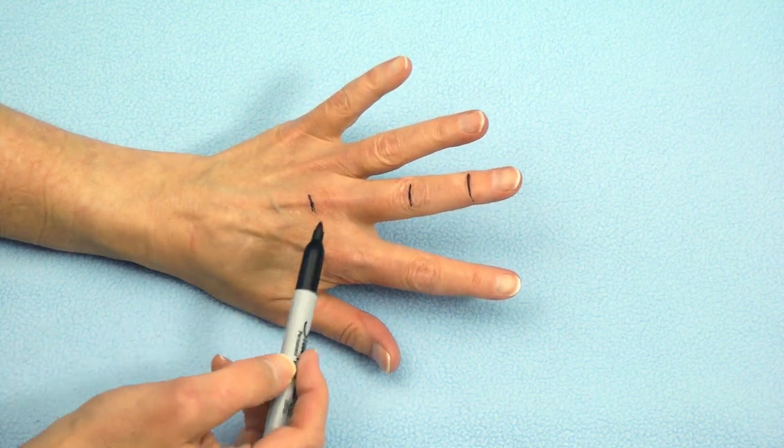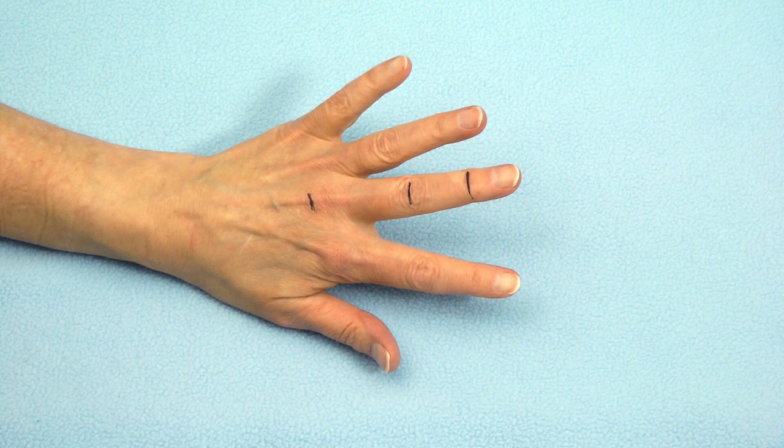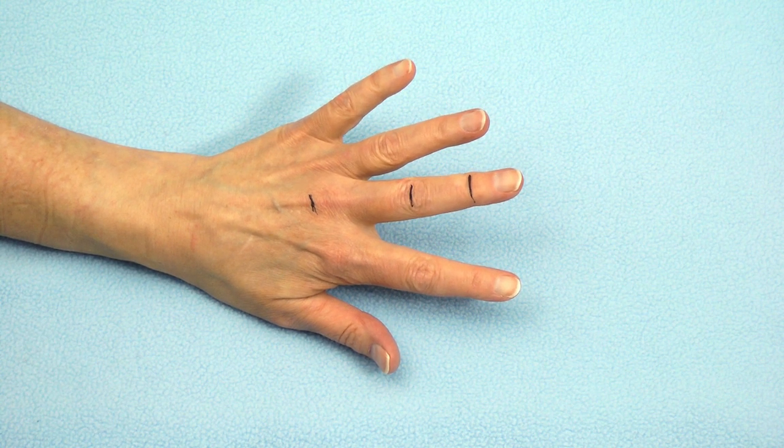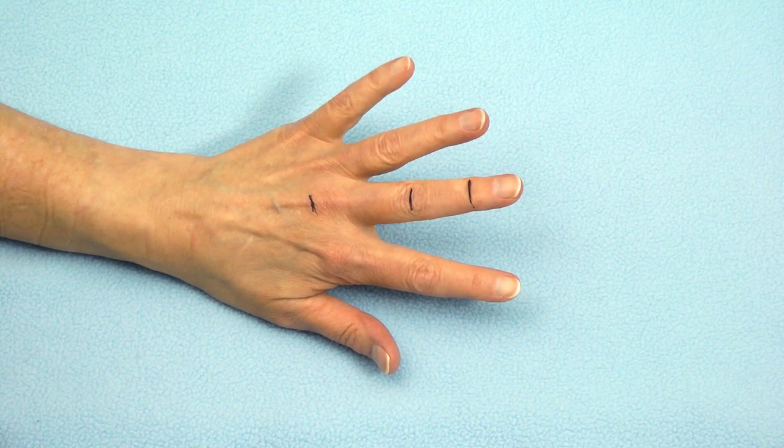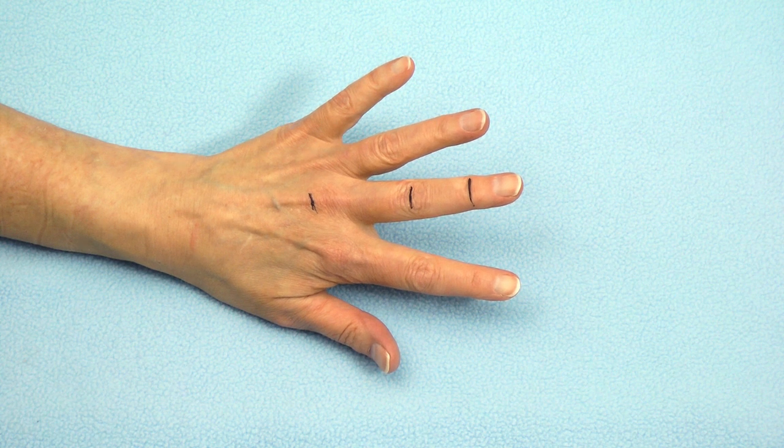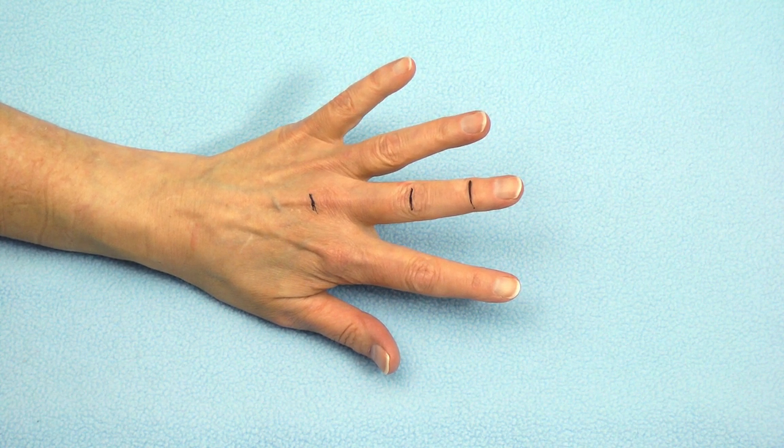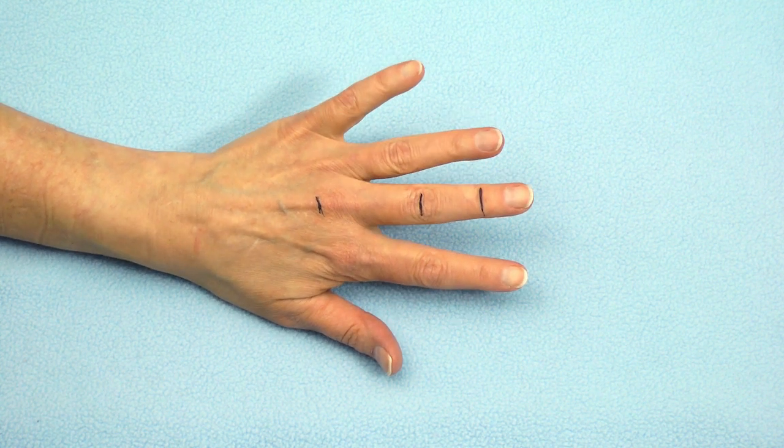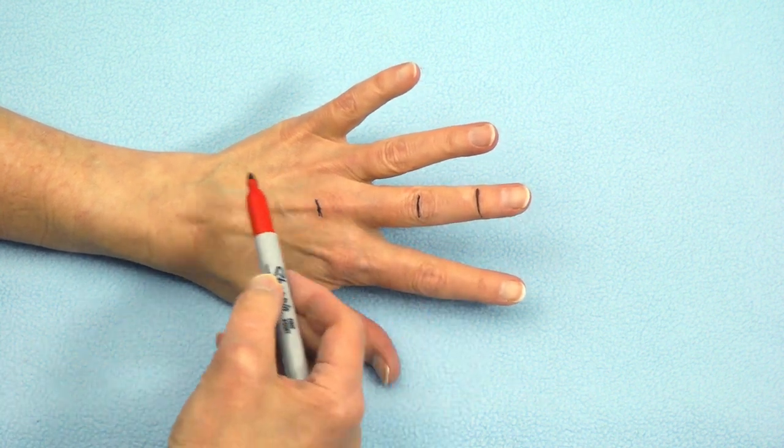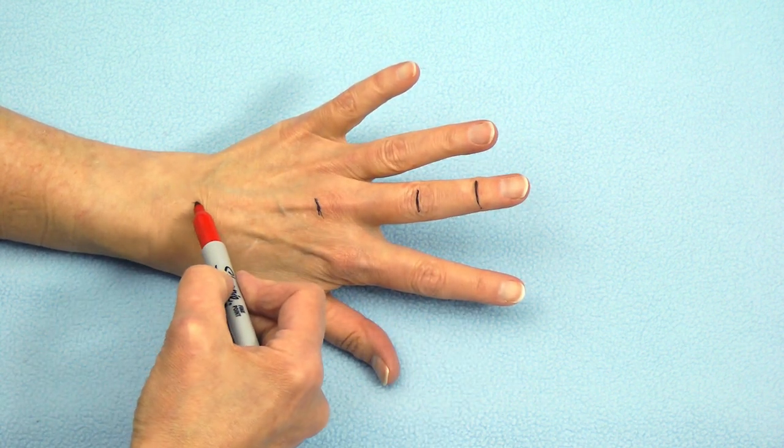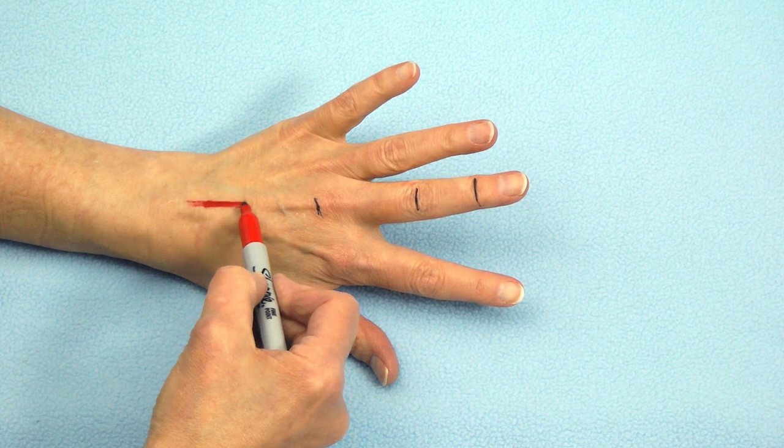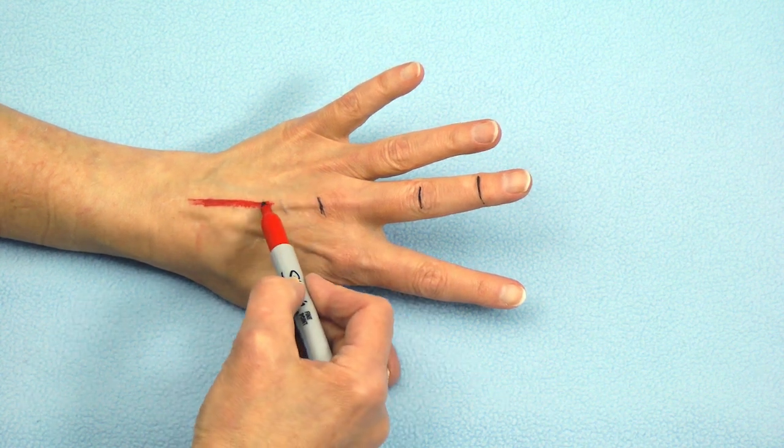The metacarpal phalangeal joint is actually relatively proximal. Now before we draw the dorsal apparatus, we're going to draw the three primary muscle insertions into the dorsal apparatus. Let's start using red and draw the extensor digitorum communis, which is a tendon that's coming distally,